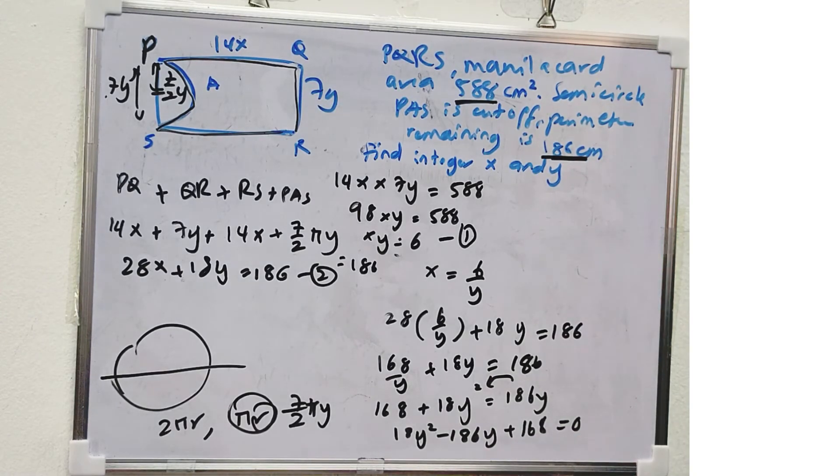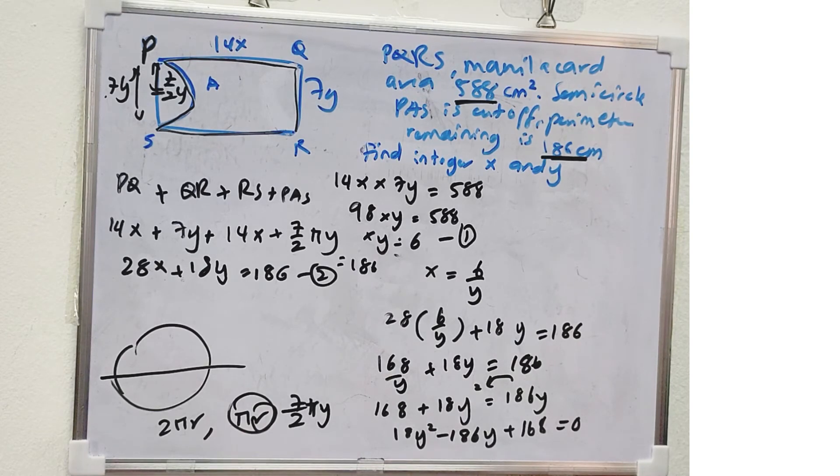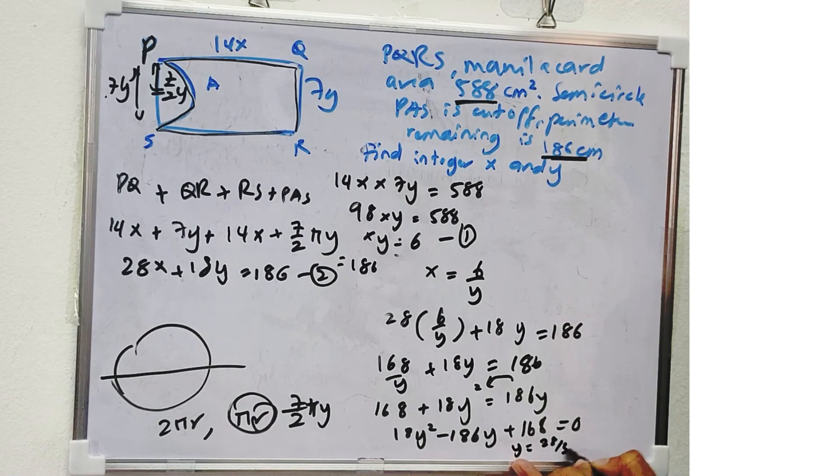So we try to get the value of Y by using calculator. So 18 minus 186, 168. 28 over 3. So we get 1. So we get Y is equal to 28 over 3 and 1.